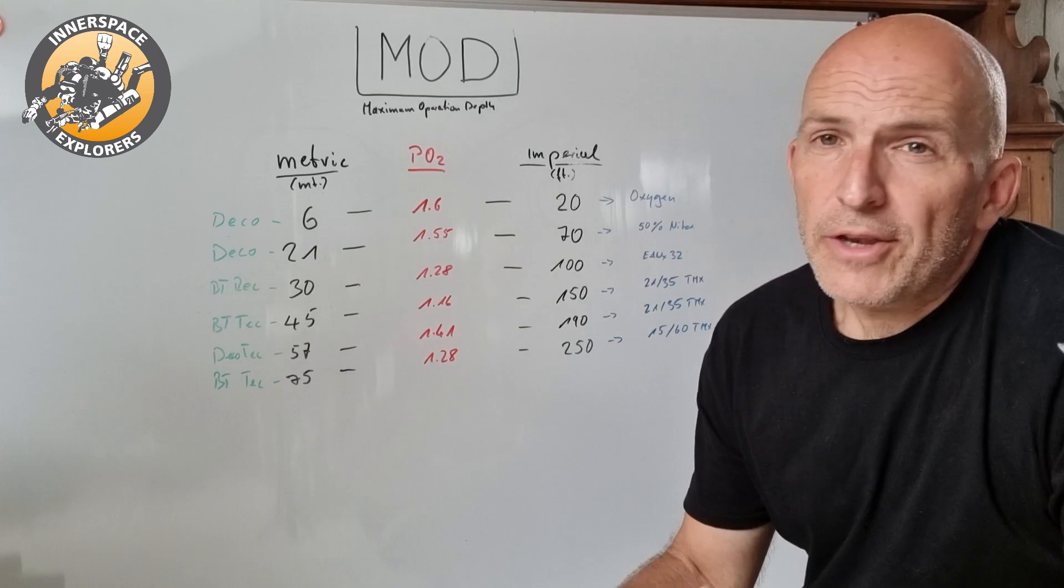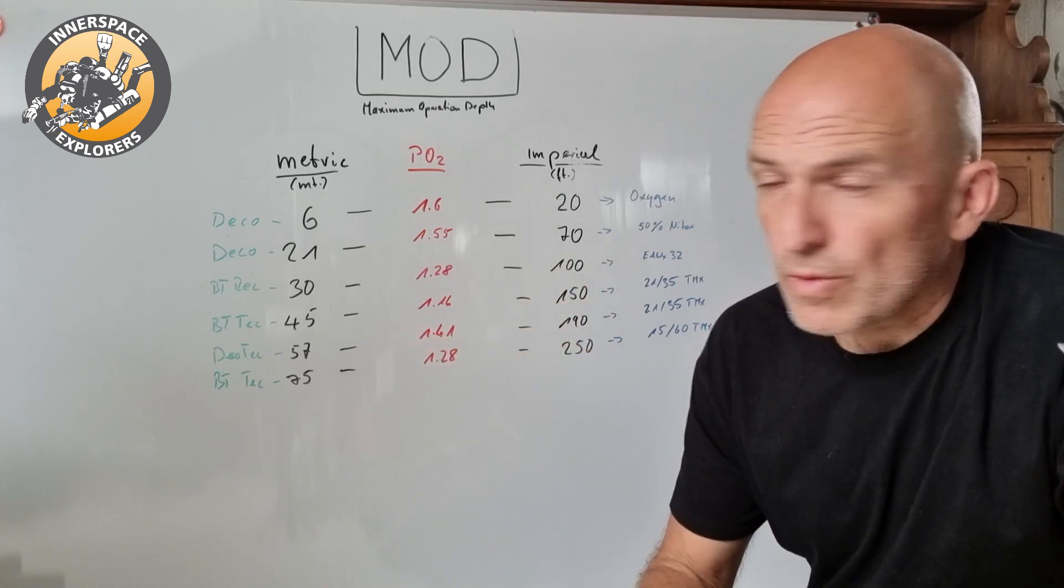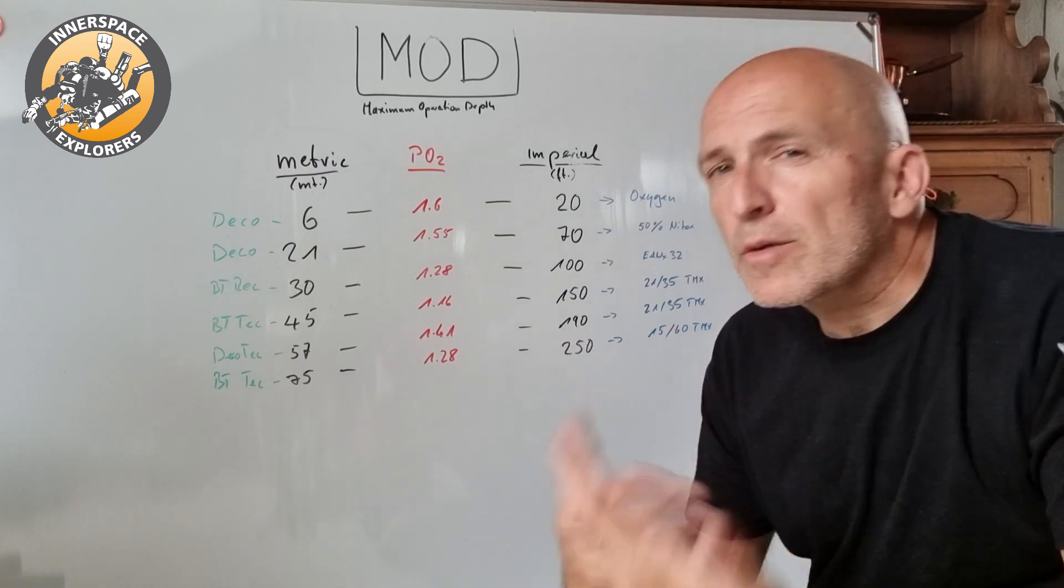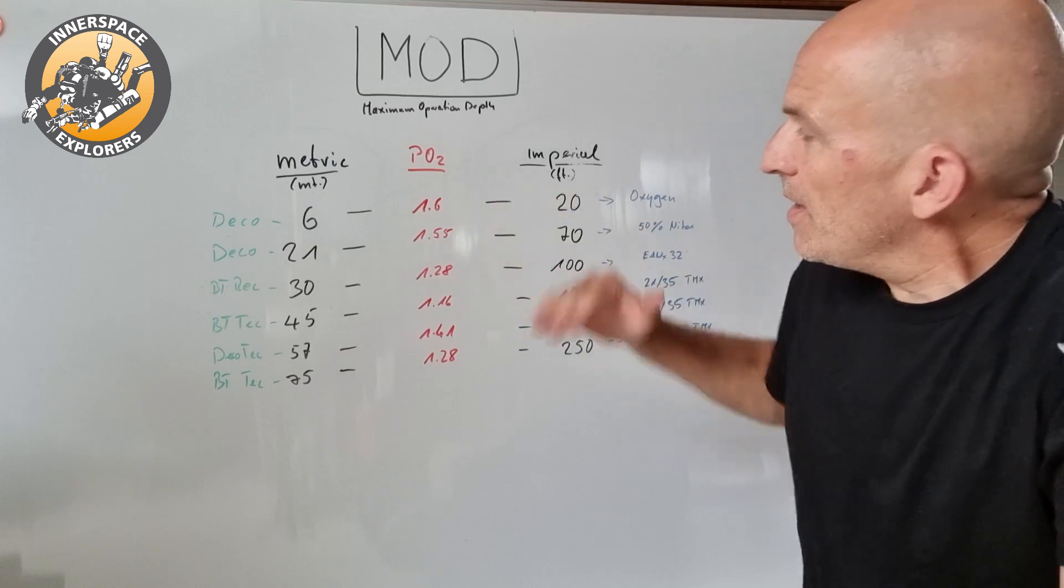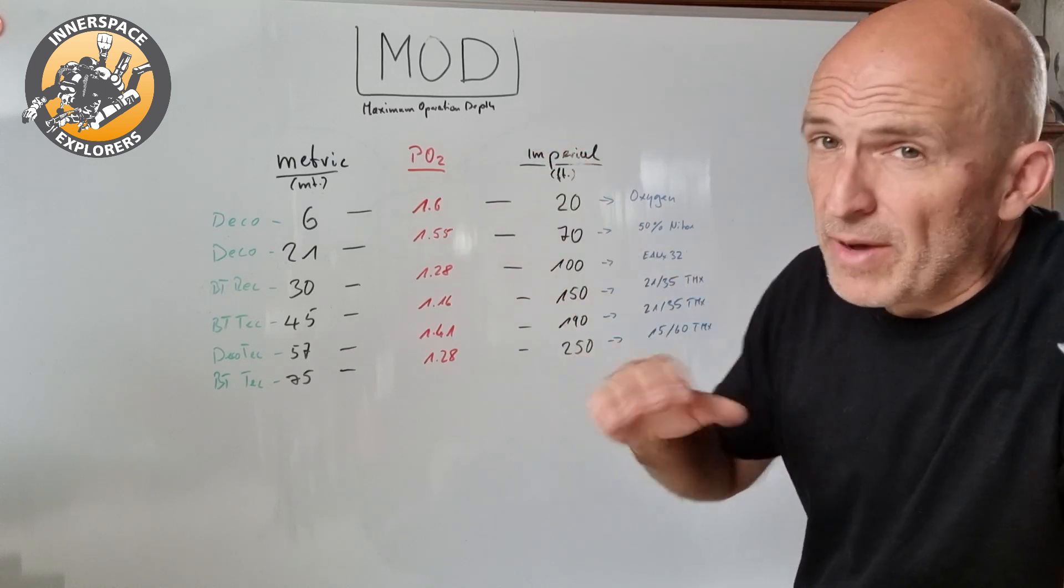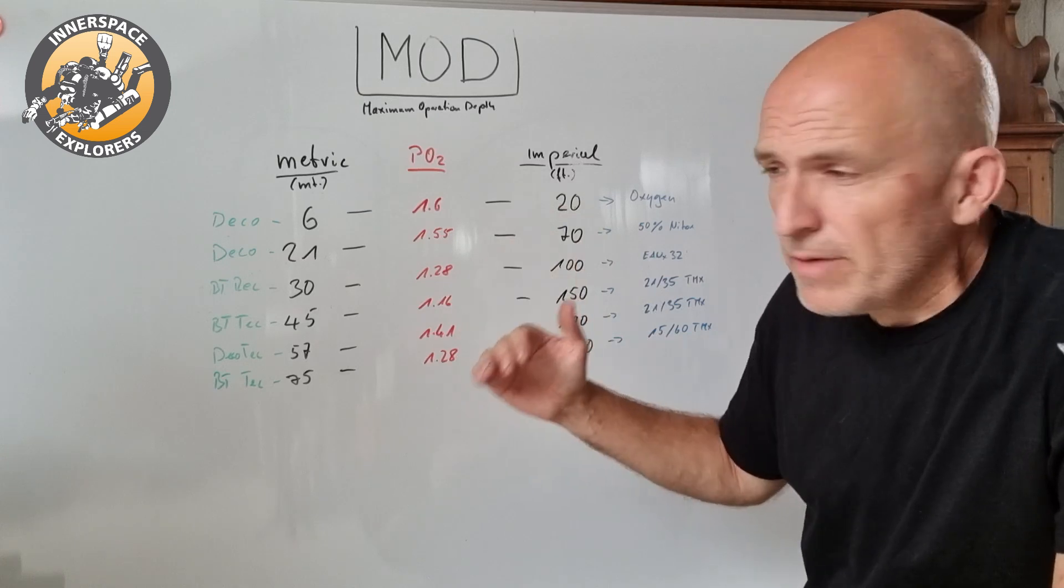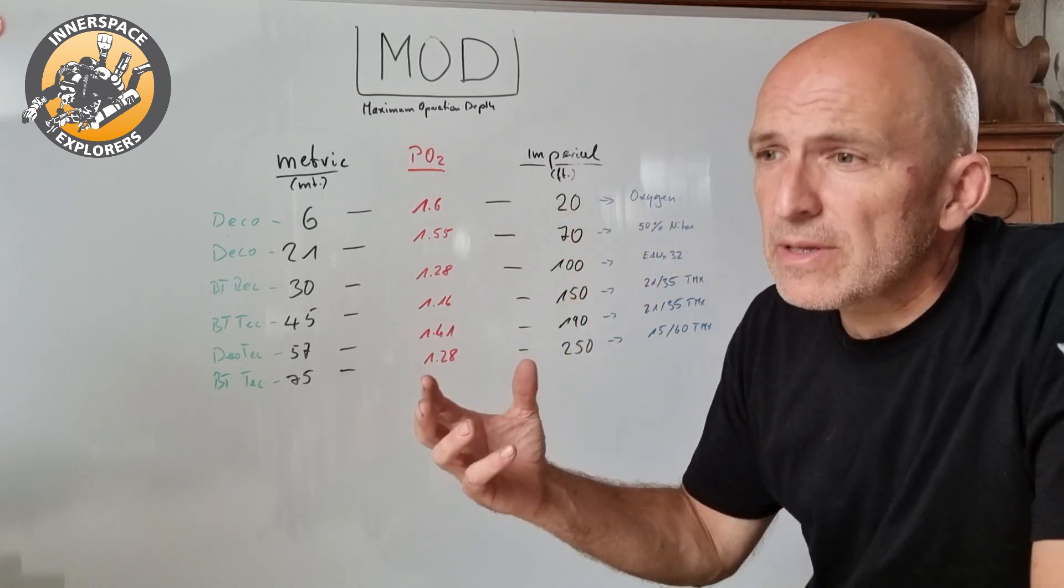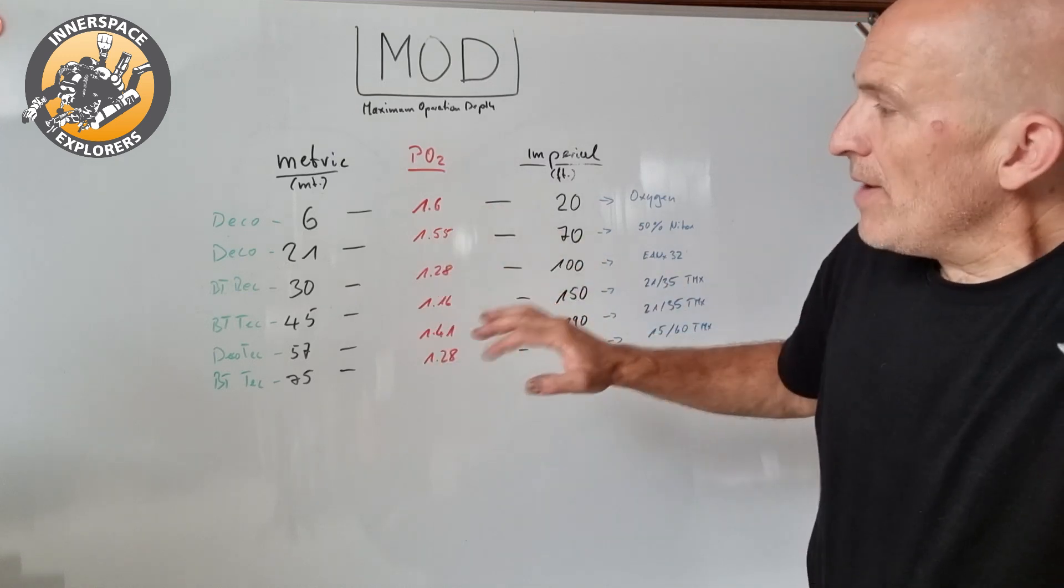If you look at the CNS clock at 1.6 bar, you would have 45 minutes till you reach 100% CNS and you're fully saturated. That's not what you want, especially in recreational diving thinking about maybe multiple dives a day. So here the MOD of the gas is by far not defined by 1.6. It's a different number which still is very reasonable but has nothing to do with 1.6.